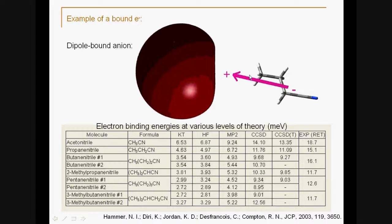If this dipole moment is large enough, it can bind an electron, and this globe here is the orbital occupied by this excess electron.